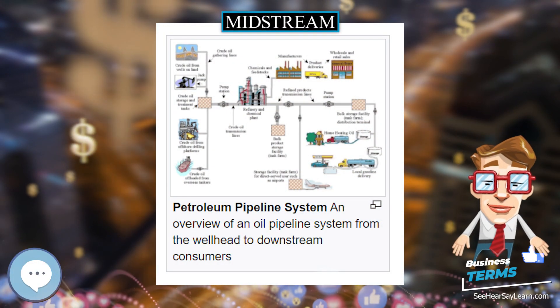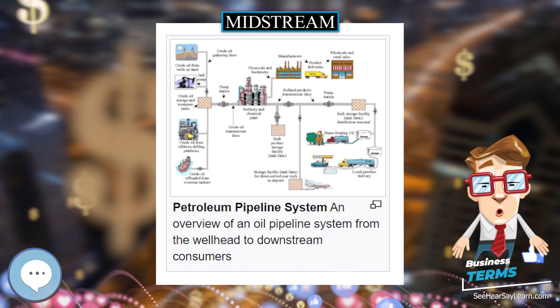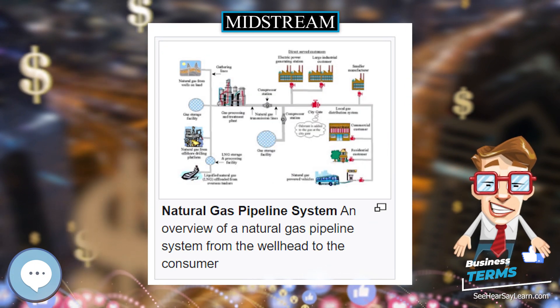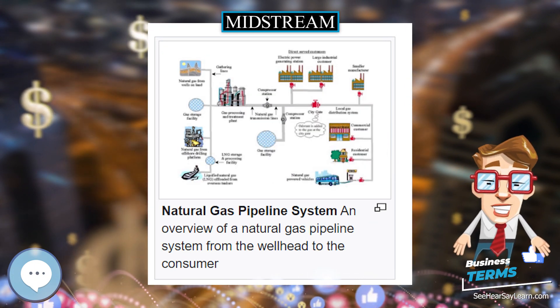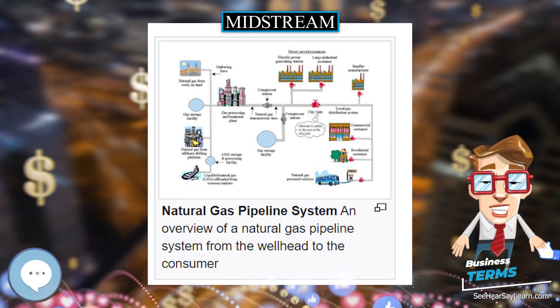The oil and gas industry is usually divided into three major components: upstream, midstream, and downstream.